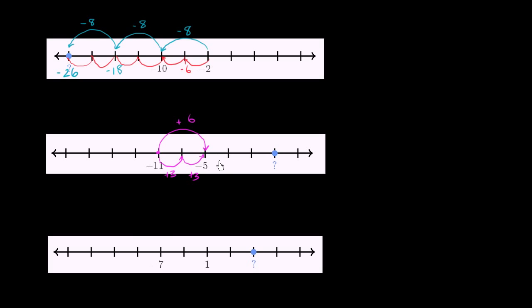So now, each mark, we just add 3. So negative 5 plus 3 is going to get us to negative 2. Plus 3 gets us to positive 1. Negative 2 plus 3 is positive 1. Plus 3 gets us to 4. So here we get to negative 26. Here we get to 4.